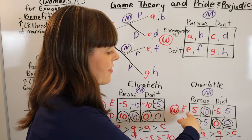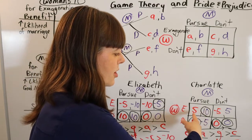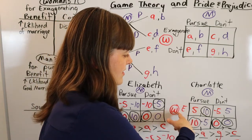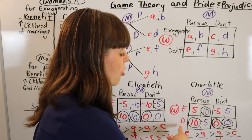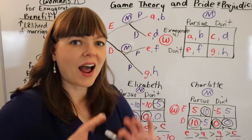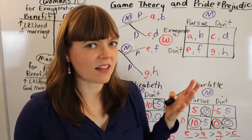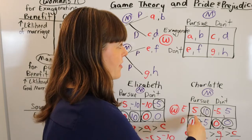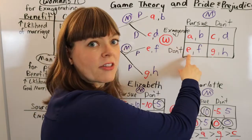The problem is this is not going to be a Nash equilibrium unless the woman prefers exaggerating and being pursued more than not exaggerating and being pursued. And I cannot come up with any logic that would lead this payoff to be higher than this one or A to be higher than E.